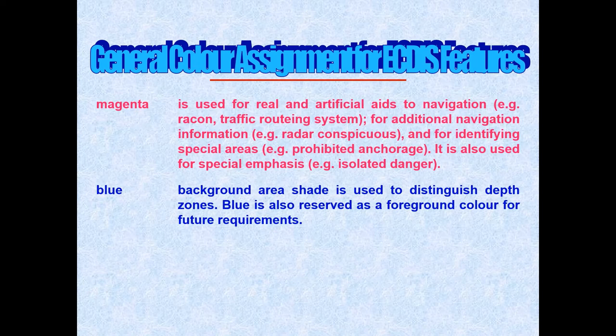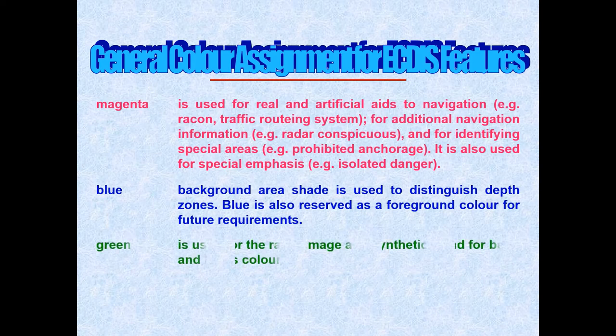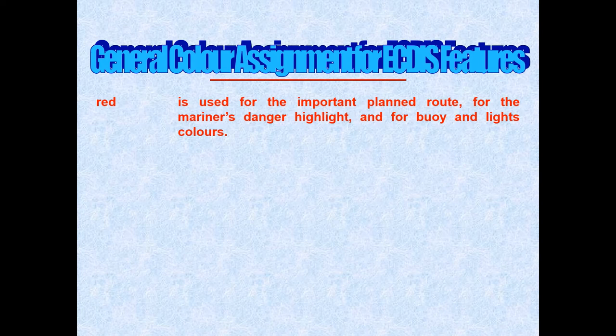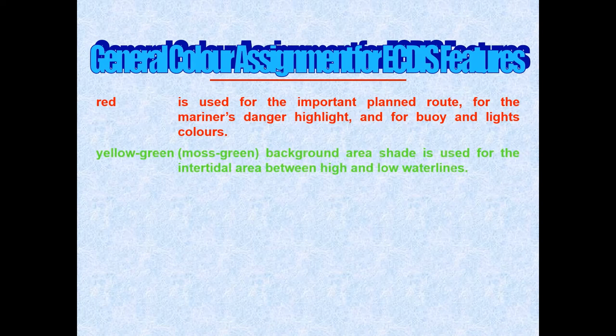Here you can see how the different colors are assigned to display different information to the mariners. For example, magenta is used for real and artificial aids to navigation, records and traffic routing schemes. Blue is for the background area shade used to distinguish the depth zones. In the previous slide you saw what black and gray colors are used for and what they symbolize. Green is used for the radar image, synthetics, and for buoys and light colors.